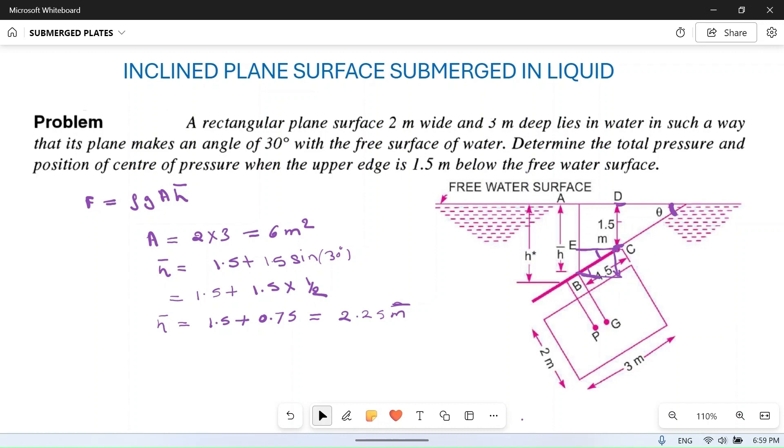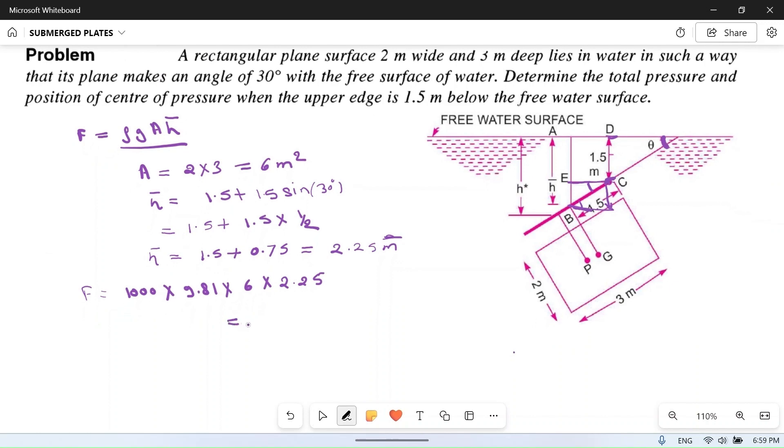Total depth of the centroid of this plate from free surface of water is 2.25 meter. So total force is ρ equals 1000 kg/m³, g equals 9.81 m/s², area is 6 m², h̄ is 2.25 meter. If you multiply all this, you will get 132,435 Newton. This is total force acting on this plate.